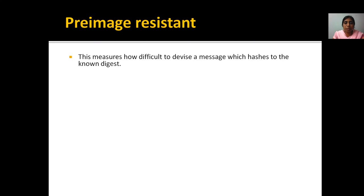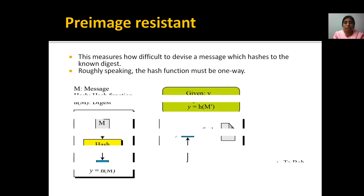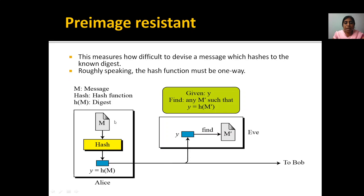Pre-image resistance is a one-way function. This measures how difficult it is to devise a message which hashes to a known digest. Roughly speaking, hash functions must be one-way. Whenever you take a message and apply the hash function, you are going to get a hash code, which is given to Bob at the second end as the message digest.